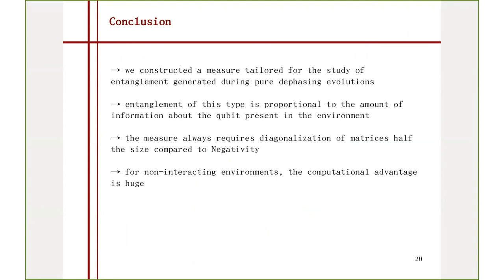So with this, I would like to conclude that I constructed a measure which is strictly tailored for the study of these pure dephasing evolutions. It definitely shows that this type of entanglement is proportional to the amount of information about the qubit present in the environment, but not to decoherence. For some situations the measure always has at least a slight computational advantage over negativity. But for some situations, the computational advantage can be huge — up to the point that you can calculate within fractions of a second something which you simply would not be able to compute, because, you know, the world would end. Thank you.